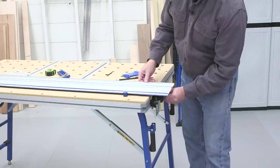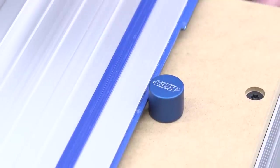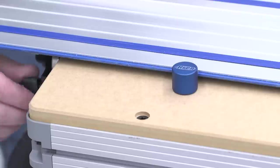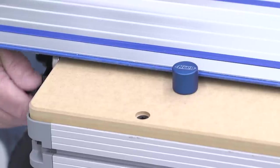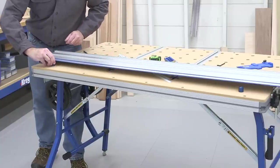Loosen the outer T knobs on the hinge mounting plate, and then slide the mounting plate over until the anti-chip strip touches the stop. Then re-tighten the knobs. Then you can move to the other end of the table and repeat this process. Double check that both stops are touching the track, and you can remove the stops.